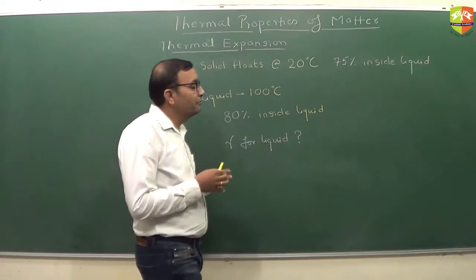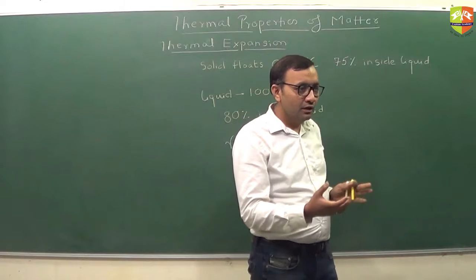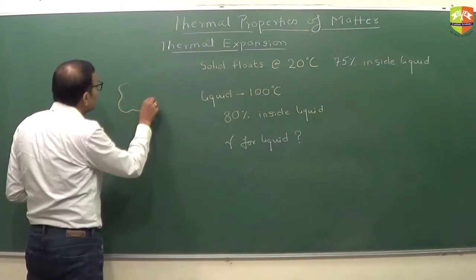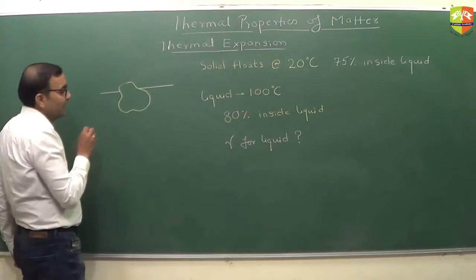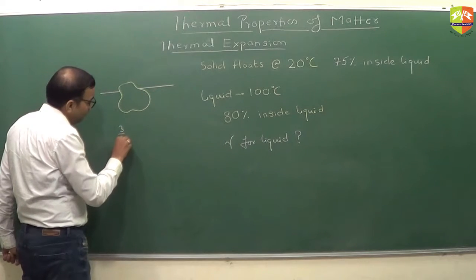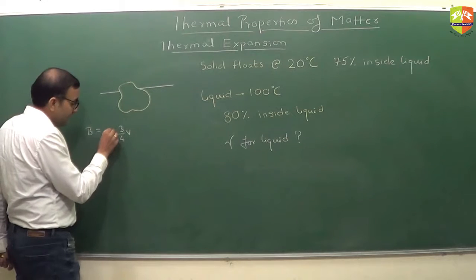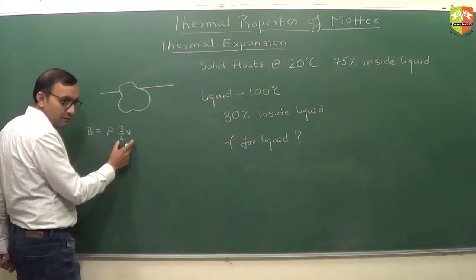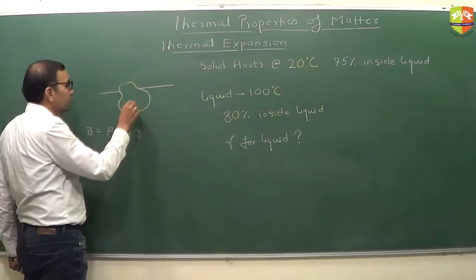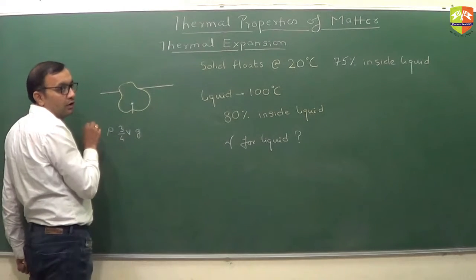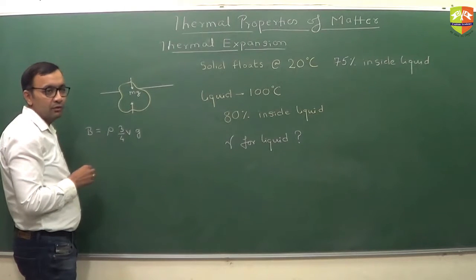What will happen is that weight of the liquid should be equal to weight of the object only, because buoyant force is balancing mg. So if this is the solid, if total volume is V, then 3 by 4 times V is inside the liquid. So buoyant force will be density of liquid into volume displaced, which is 3 by 4 V into g. This buoyant force is acting upwards. And then there will be a gravity force, mg, acting downwards.